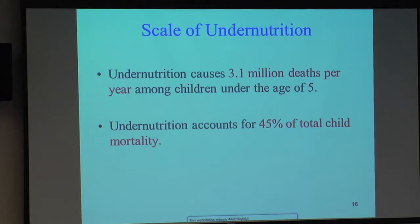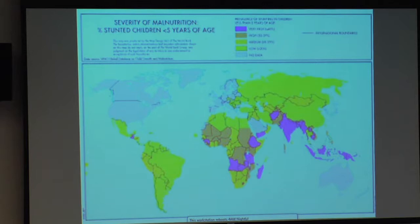When we think about the scale of undernutrition: it causes over three million deaths a year of children under the age of five, which is almost half of total child mortality in the world. Looking at the map, the pink areas are countries where greater than 30% of children are stunted — their heights are not as they should be. Sub-Saharan Africa is clearly prominent, but what's interesting is South Asia — India, Nepal, Bangladesh — also has among the highest rates of stunting.